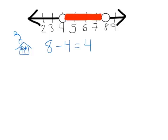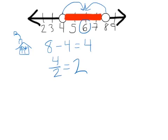But we want to find out where the middle is, so we're looking for the number in between. We're going to cut that distance in half and get 2. With that 2, we're going to move in 2 units from 8 and move in 2 units from 4 — and ta-da, we get to 6. So home base is at 6.